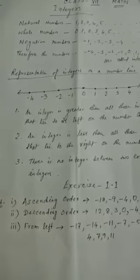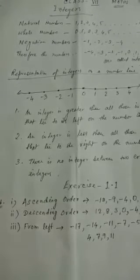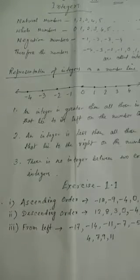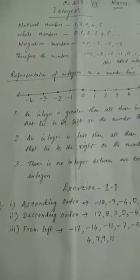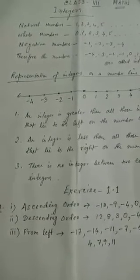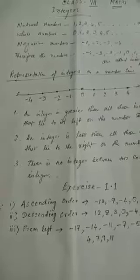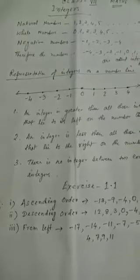So, natural numbers — you know the series 1, 2, 3, 4, 5, 6, 7 up to infinity is known as natural numbers.